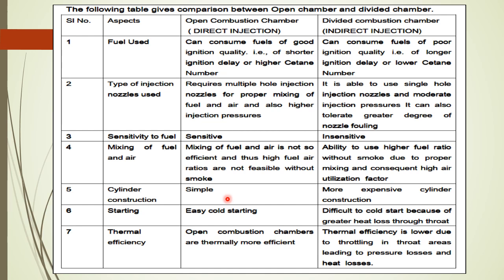Regarding mixing: in the open chamber, mixing of fuel and air is not very efficient, so high air-fuel ratios without smoke are not feasible. In divided chambers, proper mixing occurs due to swirling motion, allowing use of higher fuel-air ratios without smoke. Cylinder construction in the open chamber is simple, with the entire combustion in the main cylinder. Divided chamber construction is more expensive as the additional chamber is located in the cylinder head. Thermal efficiency is higher for open chambers; lower for divided chambers due to heat loss to the additional chamber.